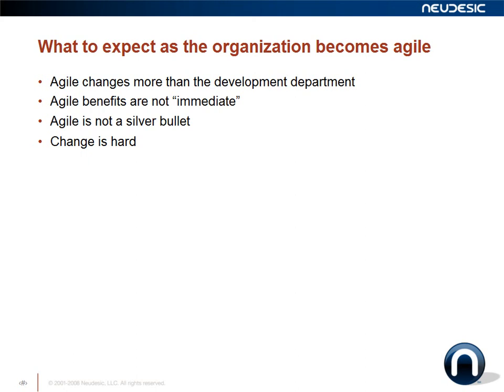Agile benefits are also not immediate. With a traditional project, you may go six to nine months before getting initial feedback on how the project is doing, whereas in agile you can usually do that within three to six iterations — as short as three or four months. But it does take time for the benefits to be recognized. Agile is not a silver bullet — there may be projects where it's not appropriate, and possibly organizations where it's not appropriate in full scale. You need to assess your organization's readiness to change in determining whether agile is the right answer.